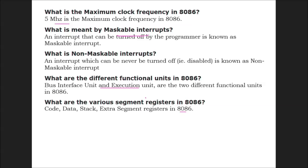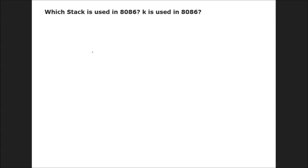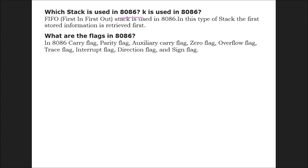What are the various segment registers in 8086? Code, data, stack, and extra segment registers are the various segment registers in 8086. What does EU do? The Execution Unit (EU) receives program instruction codes and data from BIU, executes these instructions, and stores the result in general registers. Which stack is used in 8086? First In First Out, as already suggested.